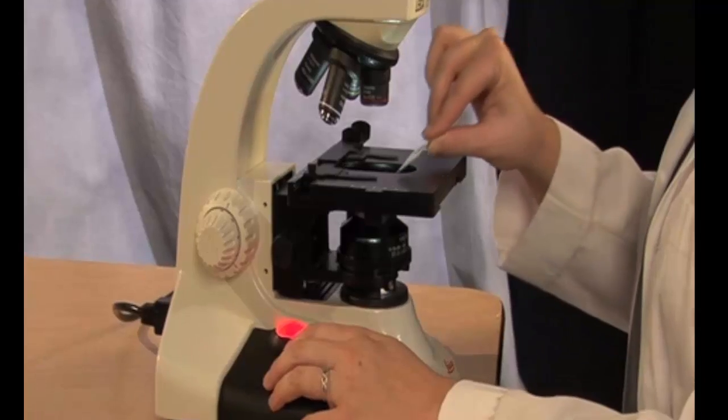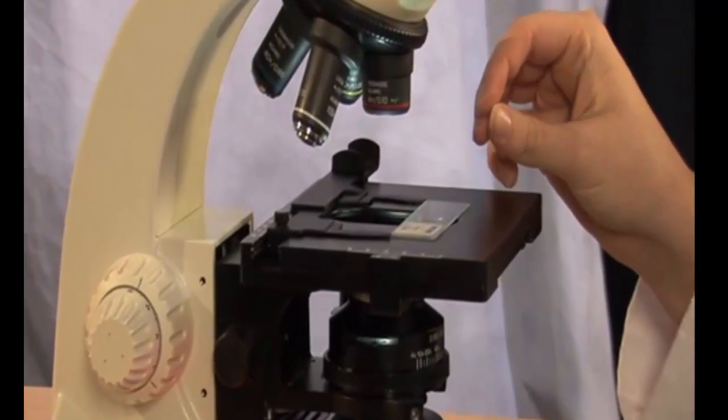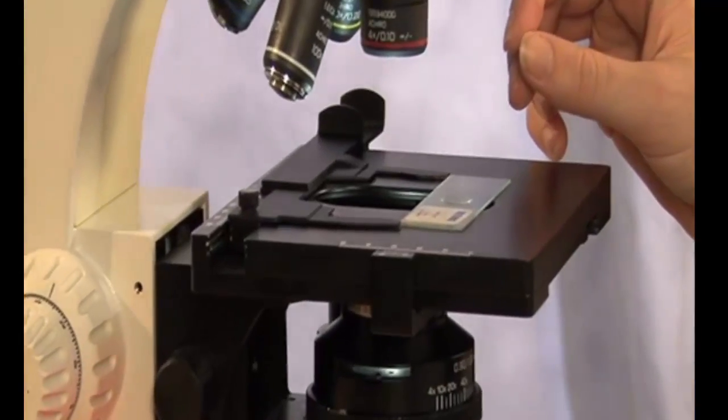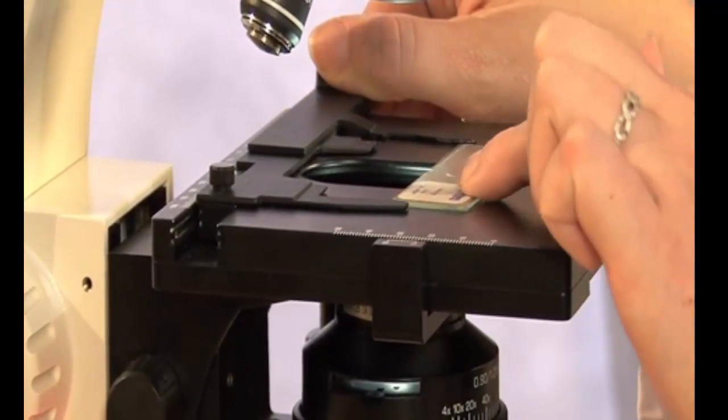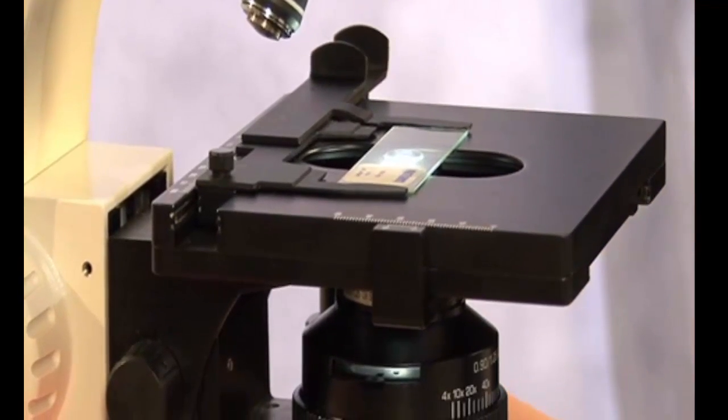To place a slide on the stage, bring the stage a little forward. Place the slide down on the stage and squeeze the clips together as you slide the microscope slide all the way to the back and to the left. Then gently release the clips.